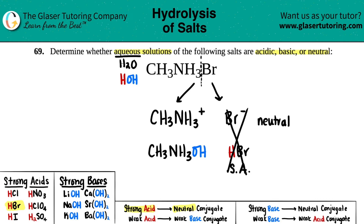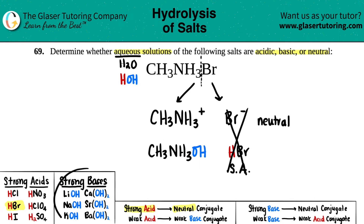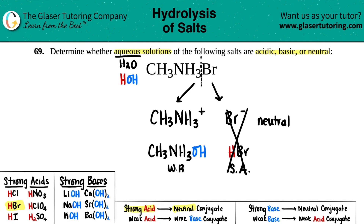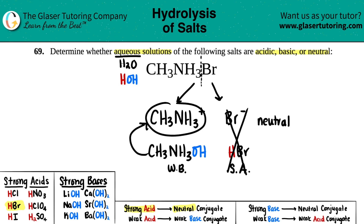Now for CH₃NH₃OH: scanning my list of strong bases, it's not there, so it's classified as a weak base. For weak bases, the conjugate is still acidic — it won't be neutral. So CH₃NH₃⁺ is acidic, and we don't cancel that one out because it retains acidic properties.